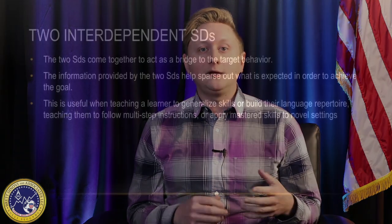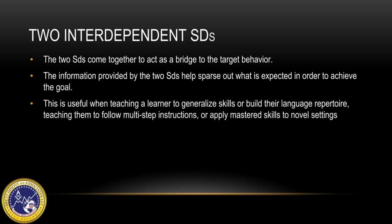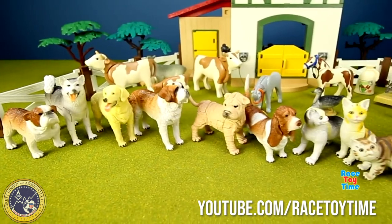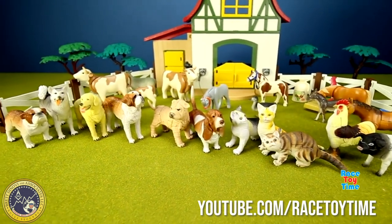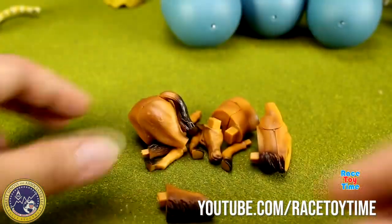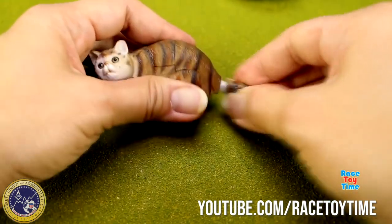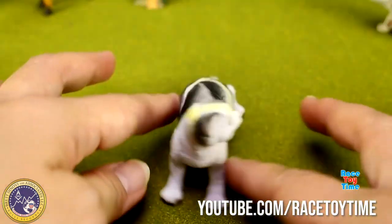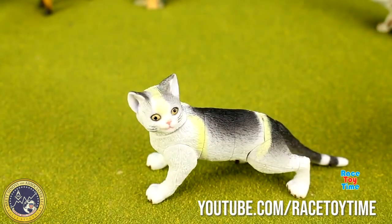Joint control is great for getting your learners to generalize skills or display discrimination in novel settings. What it lets us do is test whether or not your learner has the bridge skills necessary to take those prerequisite skills they already have and combine them to form something new and novel. For example, if a learner can tact animals and tact colors and you give them a bin full of toys containing red cats, blue cats, green cats, green dogs, and blue dogs, and you give them a color and an animal, they can take those two pieces of information together and search and discriminate.